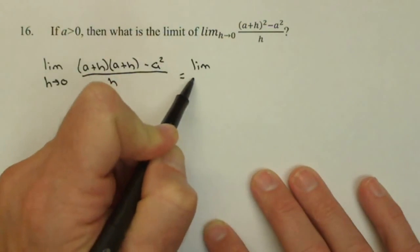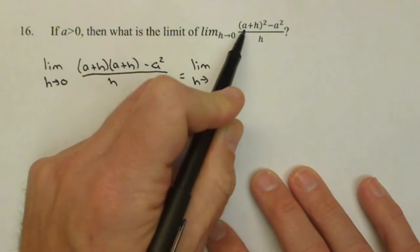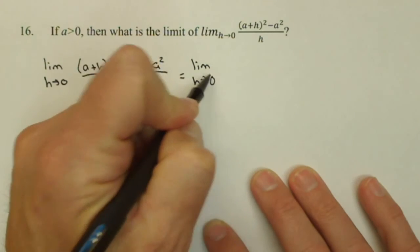One of the common mistakes on a problem like this is to just say that's a squared plus h squared. So be careful of that.